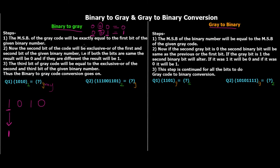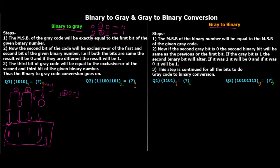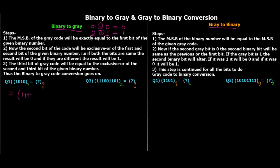Let's convert binary 1010 to gray code. First, write down the MSB as-is: 1. Next, take XOR of the first and second binary bits: 1 XOR 0 = 1, since the bits are different. Then XOR the second and third bits: 0 XOR 1 = 1. Finally, XOR the third and fourth bits: 1 XOR 0 = 1. So the gray code for binary 1010 is 1111.